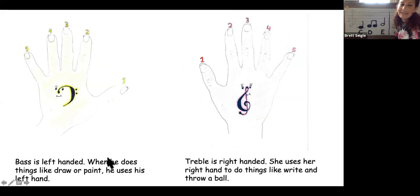Bass is left-handed. When he does things like draw or paint he uses his left hand. Take your left hand and put it on top of bass's hand and then take your thumb and tap your thumb for finger one. Tap your pointer for number two. Tap your middle finger. Tap your ring finger for four and tap your pinky for five. Good.